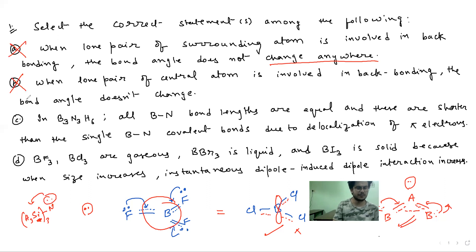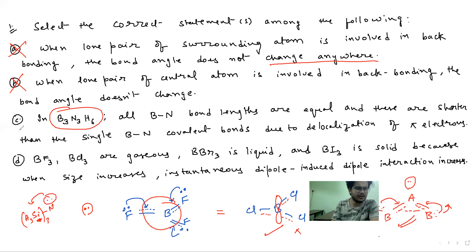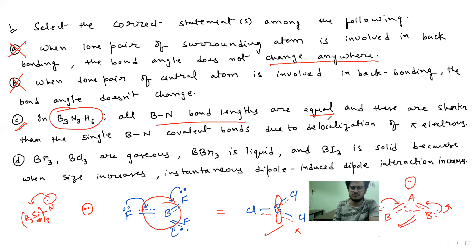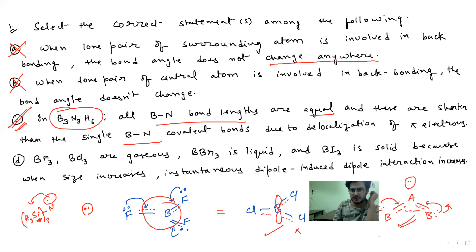So these two statements are not correct. Then comes the typical standard case of borazine, B3N3, analogous to benzene. In borazine, all B–N bond lengths are equal — yes, they are equal. This is a simple backbonding case, and they are shorter than the single bond B–N. Yes, because of backbonding. You must know these things. This is correct.